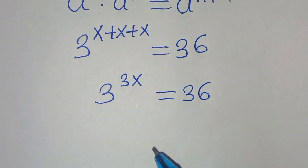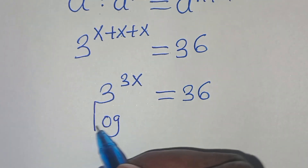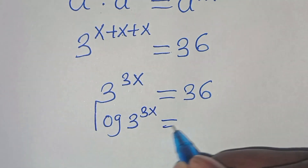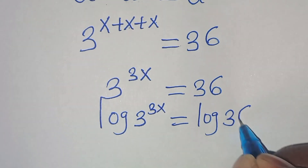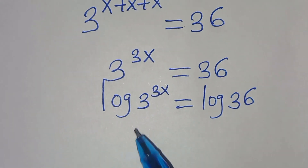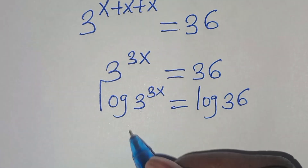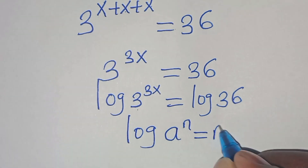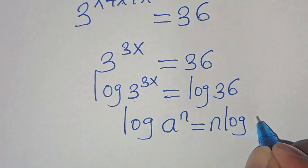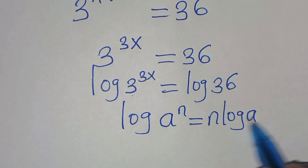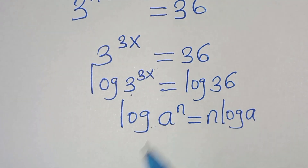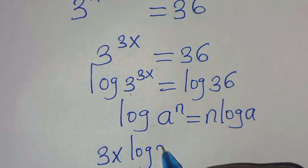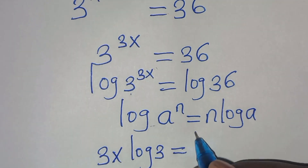To solve for x, let's introduce logarithms on both sides, so we have log of 3 to the power of 3x equals log 36. Now, log of 3 to the power of 3x is in the form log a to the power of n, which we can express as n·log a. Applying this power rule property, 3x·log 3 equals log 36.